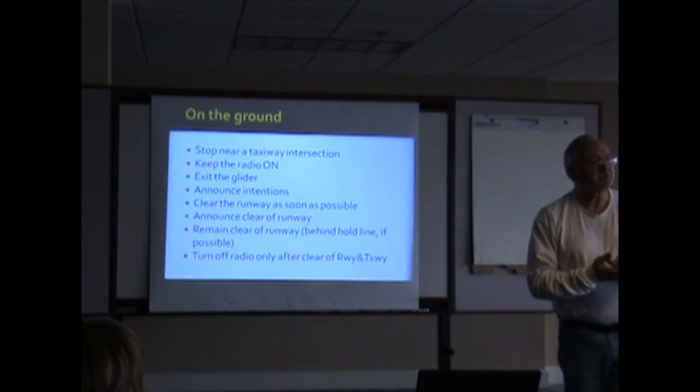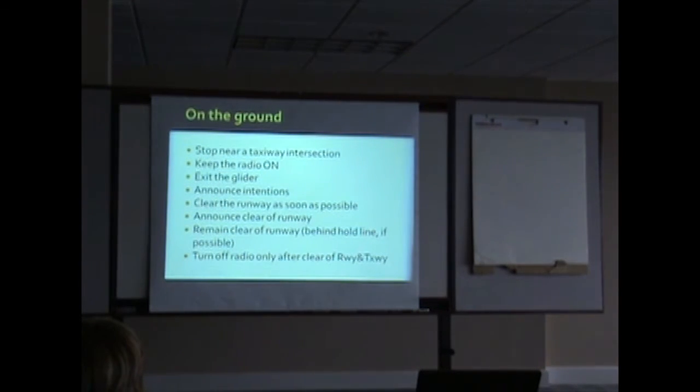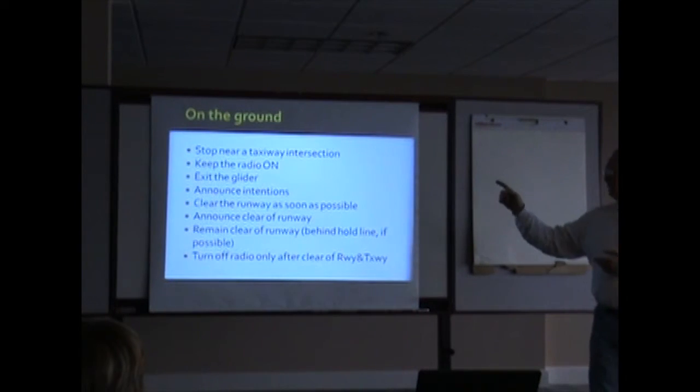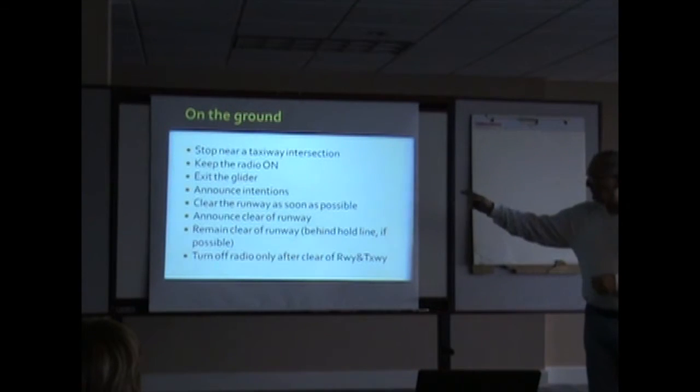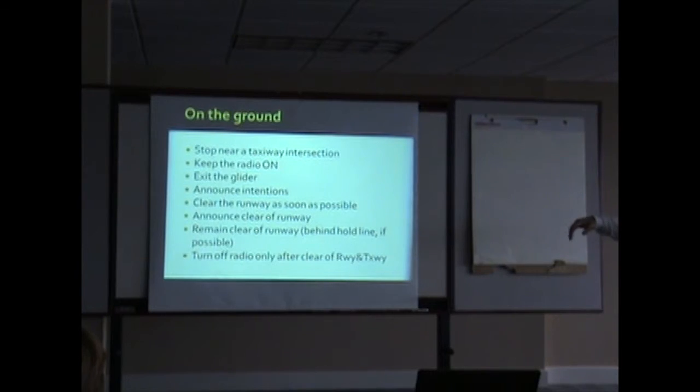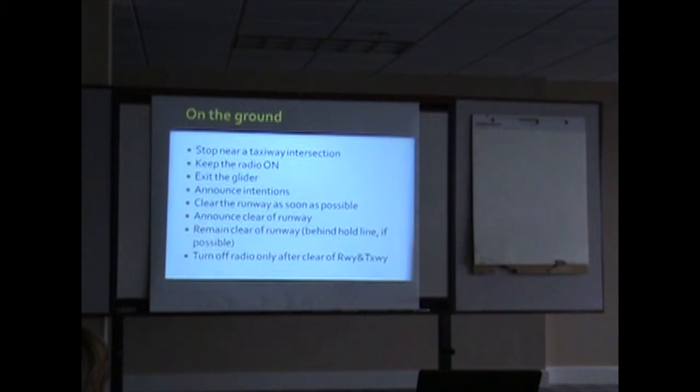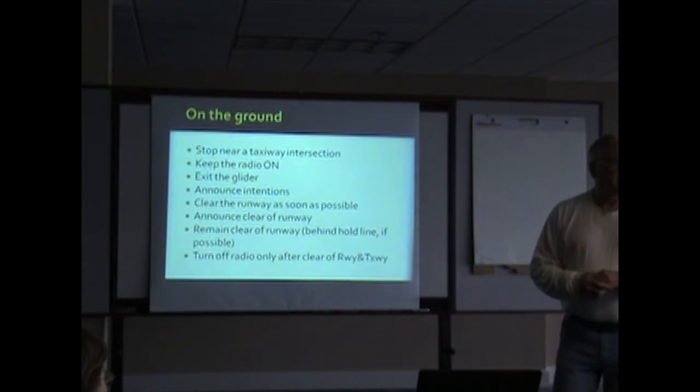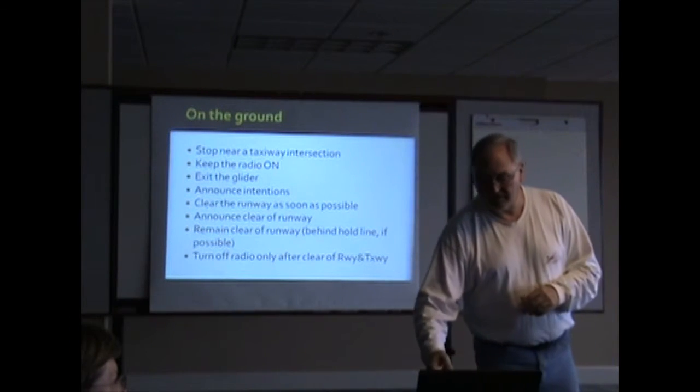Okay, this is an extension of some of the things that we've already talked about. When you get on the ground, get off the runway. Keep the radio on. Exit the glider. Tell them, tell everyone, I'm on the ground, I'm moving the glider. Move the glider off the runway. Keep the radio on. Announce that you're clear of the runway. Remain clear of the runway behind the hold line if there is one. And turn off the radio only after you are clear of all movement areas. Because otherwise you want to pay attention to who's coming into this airport. You may end up having to help another glider that just landed.